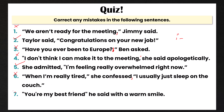Finally, number seven is incorrect. 'You're my best friend,' comma, before the closing quotation mark, then 'he said with a warm smile.' So let me know in the comment section how many you got correct out of seven.